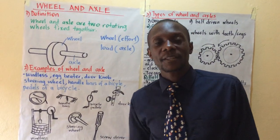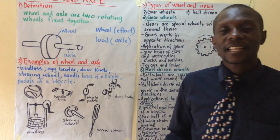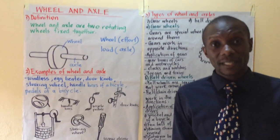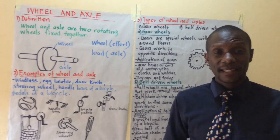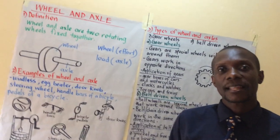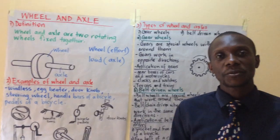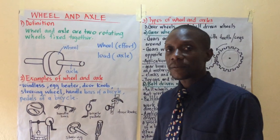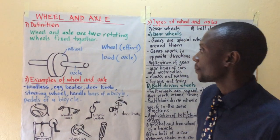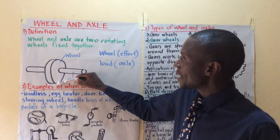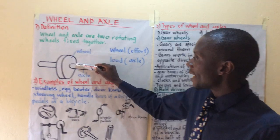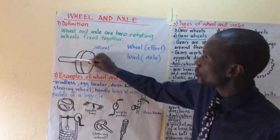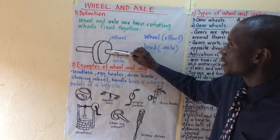We are beginning with the definition. What do you understand by wheel and axle? Wheel and axle are two rotating wheels fixed together — or they are two rotating levers. This is the illustration of wheel and axle. We have a bigger wheel and a smaller wheel, and the bigger wheel is attached onto the smaller wheel, which is like a rod.